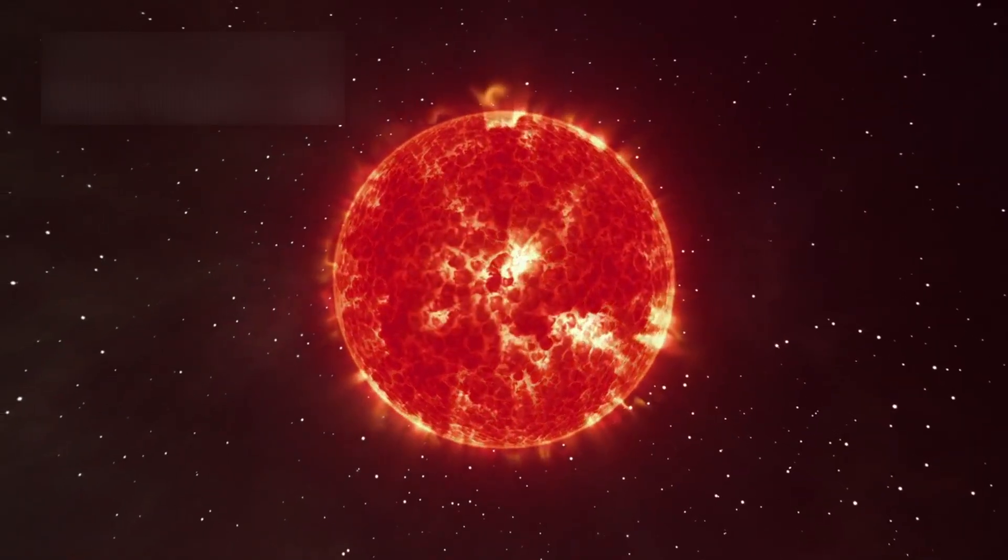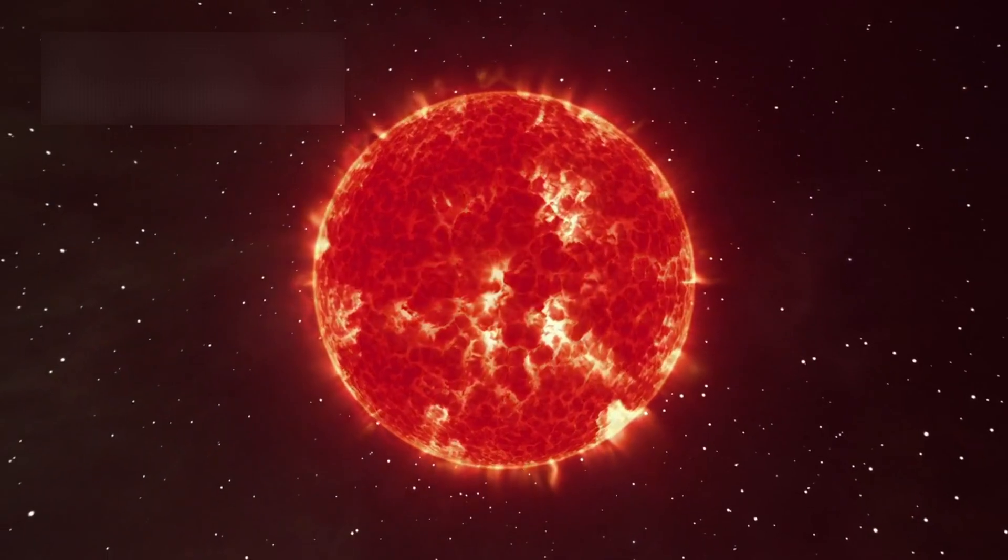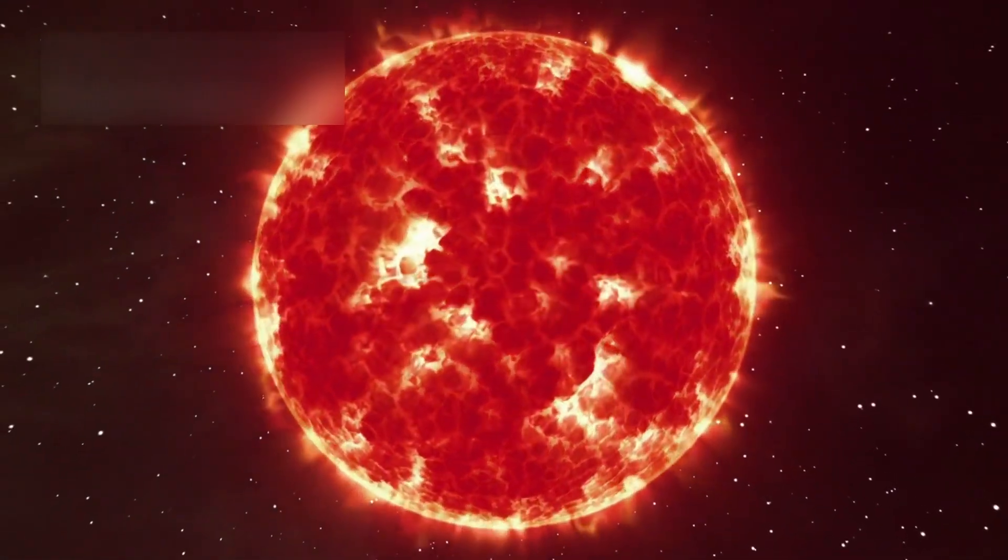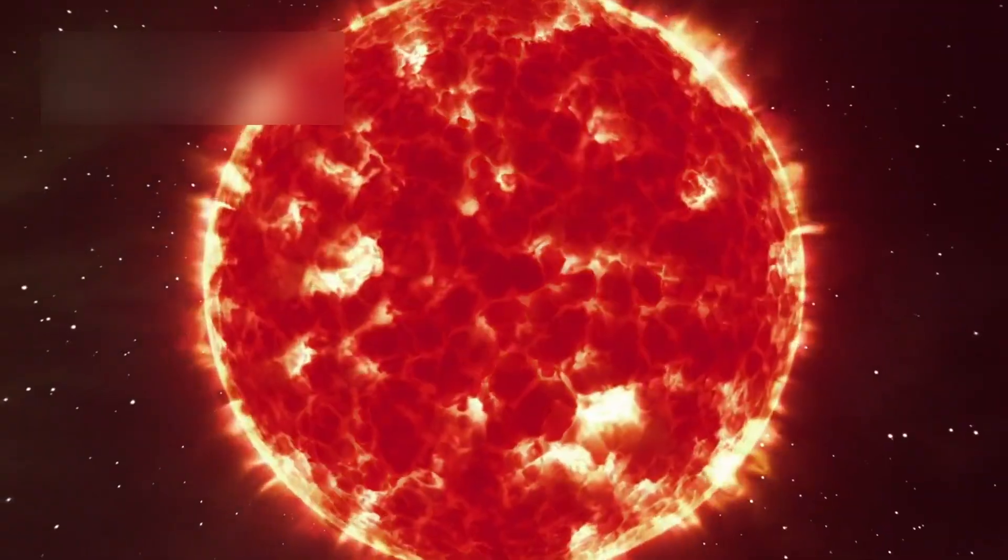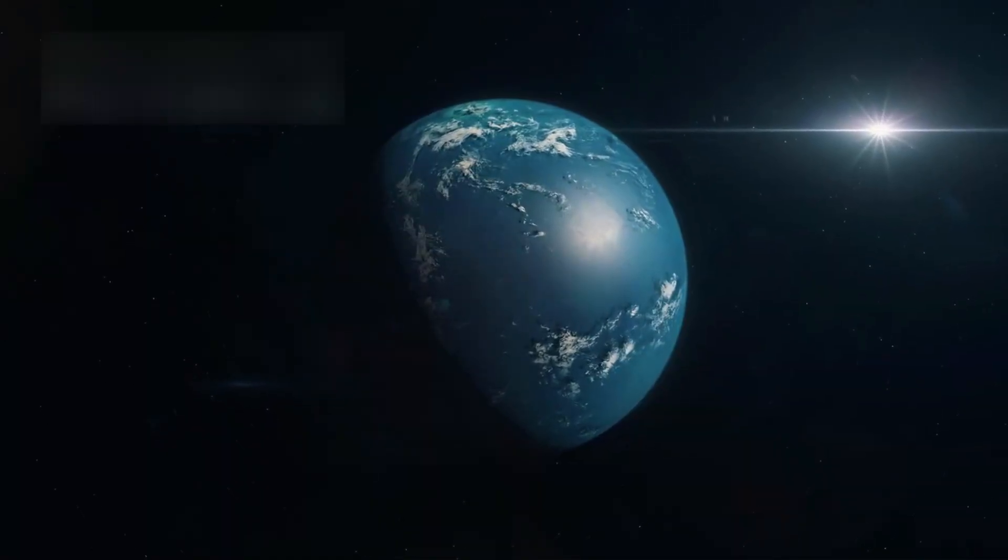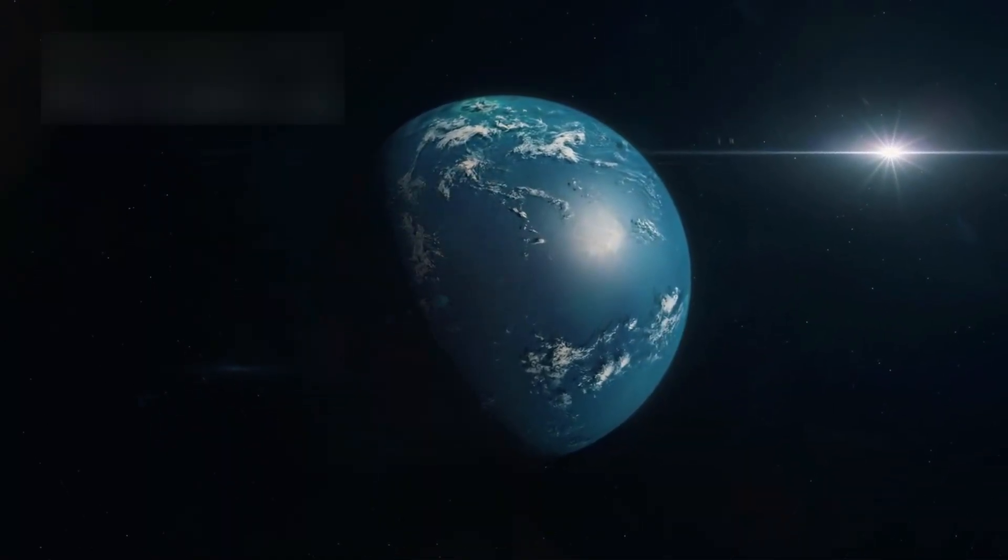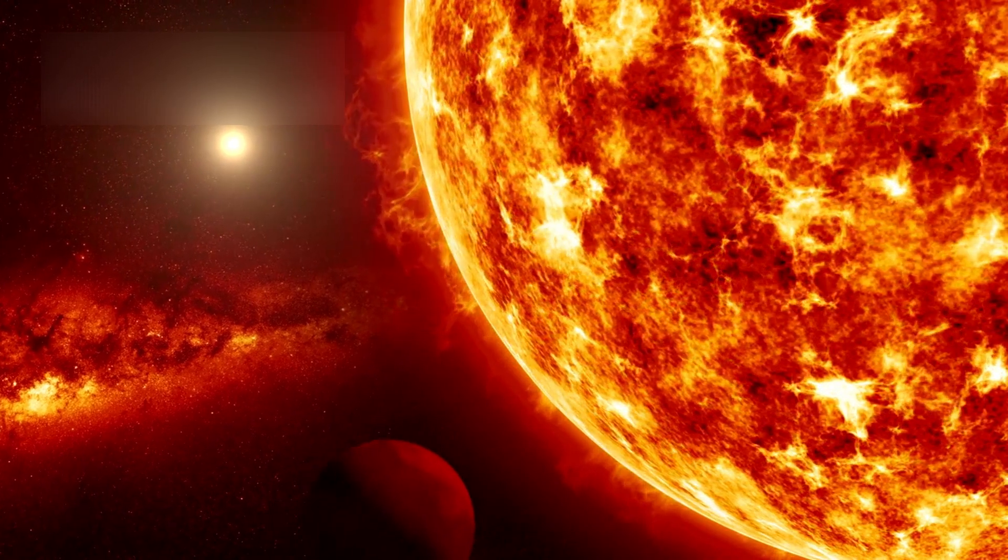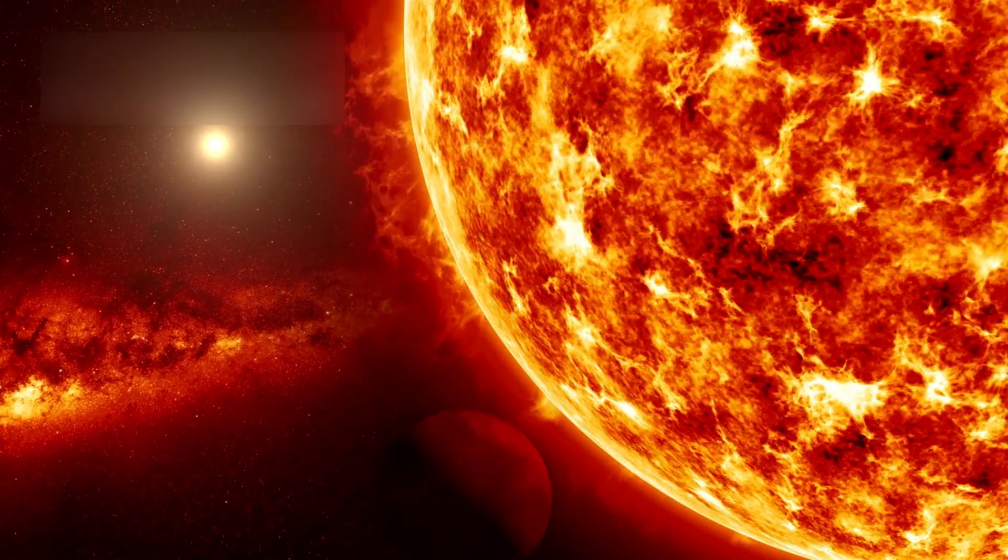Proxima Centauri b orbits Proxima Centauri, a small red dwarf star that is the closest star to our Sun and part of the Alpha Centauri system. The planet sits in the habitable zone, where liquid water could exist on the surface. Scientists have long considered Proxima b a leading candidate for life.